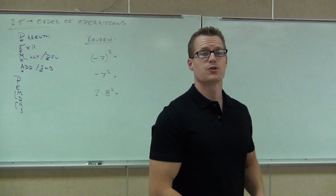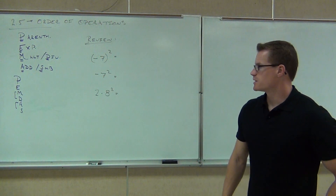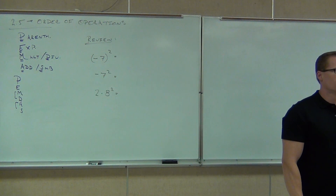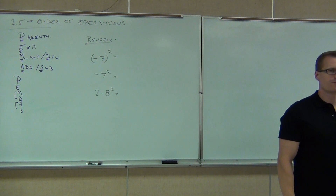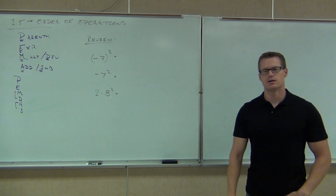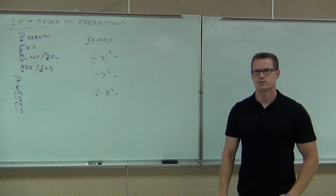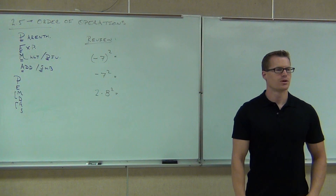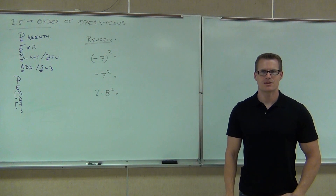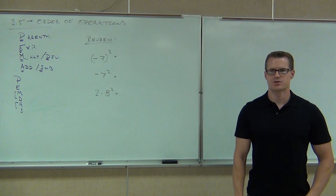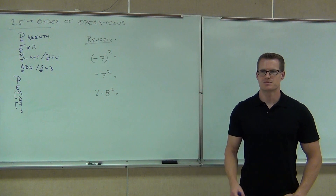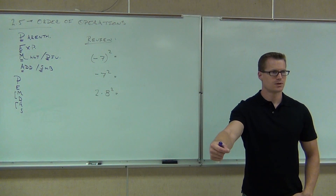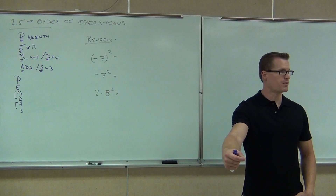Let's look at the first review problem: negative 7 in parentheses, squared — (-7)². Is this going to be positive 49 or negative 49? The negative is inside the parentheses, which means it's being squared. What's a negative times itself? Positive. So this is going to be positive 49.